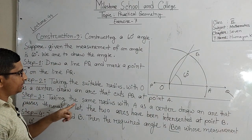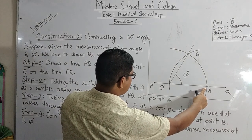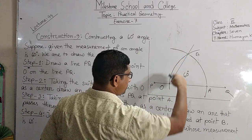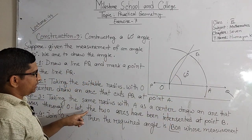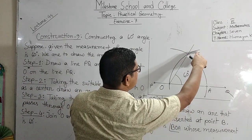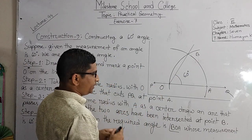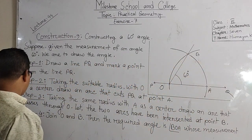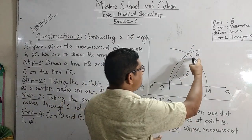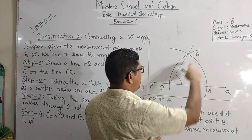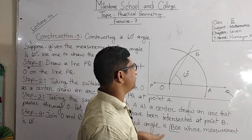Step 3: taking the same radius with A as a center, draw an arc that passes through point O. Let the two arcs intersect at point B. Step 4: join O and B. Then the required angle is BOA. If we join O and B, we will get angle BOA, and this angle's measurement is 60 degrees. This is our required angle.